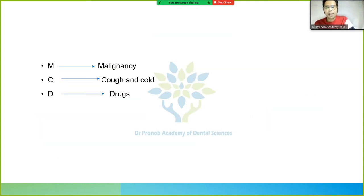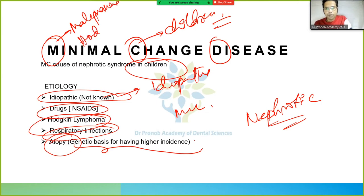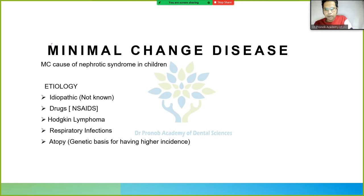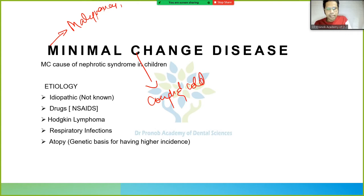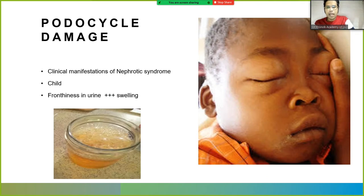A mnemonic to remember minimal change disease etiology is MCD: M for malignancy (Hodgkin's lymphoma), C for cough and cold (respiratory infection), D for drugs (NSAIDs). Podocyte damage occurs. Clinical manifestation includes frothiness in urine plus swelling (edema). Diagnosis via blood shows decreased albumin (hypoalbuminemia) and increased lipids (hyperlipidemia). Urine shows massive proteinuria and oval fat bodies or lipid casts.